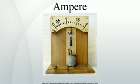The SI unit of charge is the quantity of electricity carried in one second by a current of one ampere. Conversely, a current of one ampere is one coulomb of charge going past a given point per second. In general, charge Q is determined by steady current I flowing for a time T as Q equals IT.